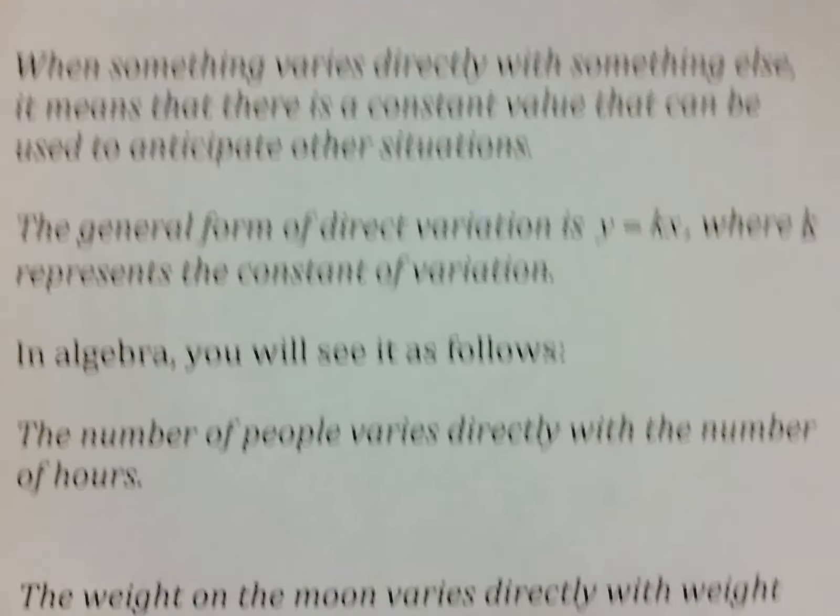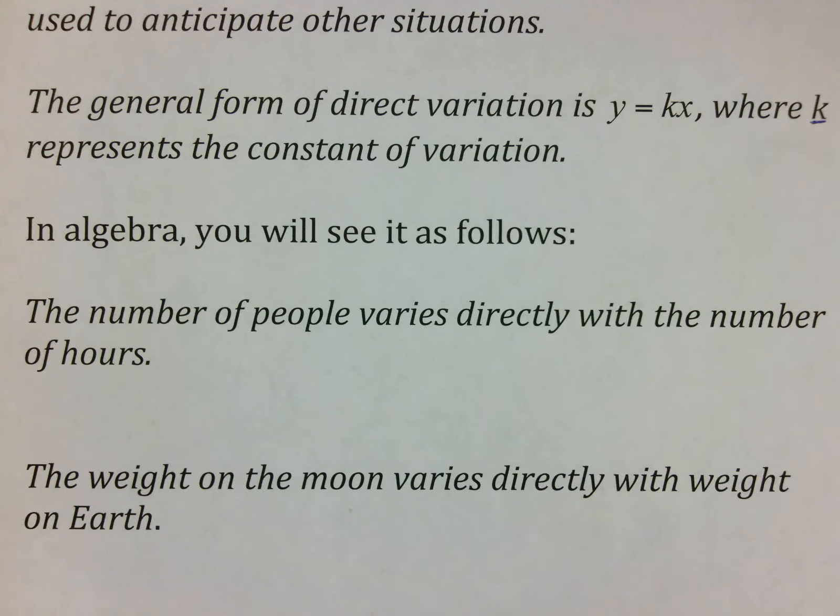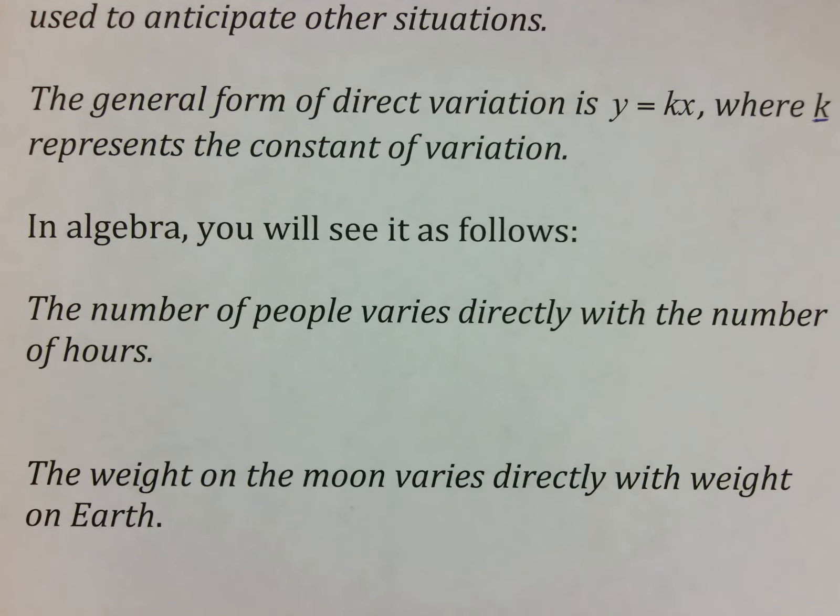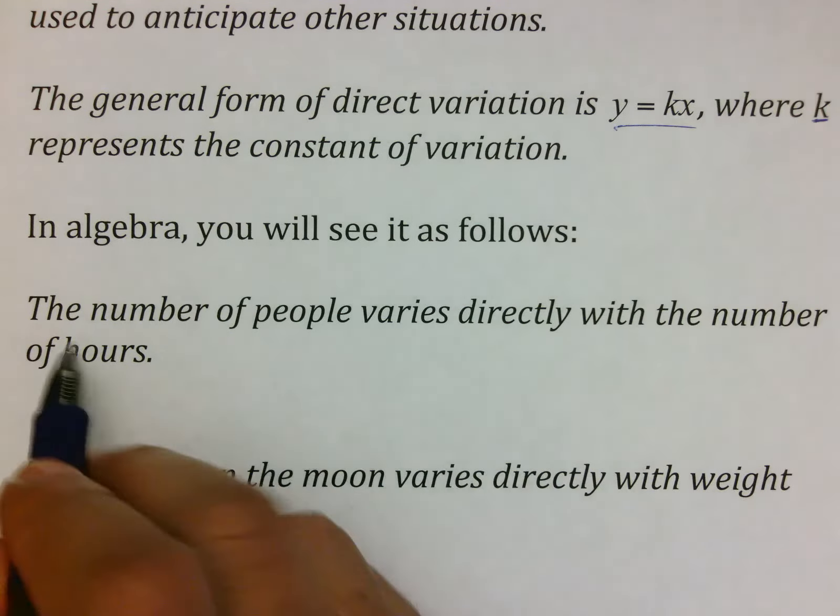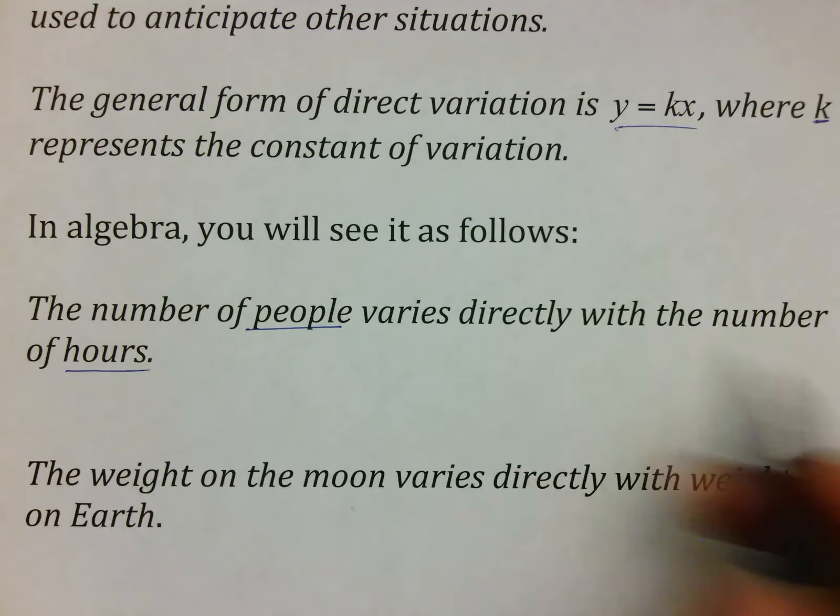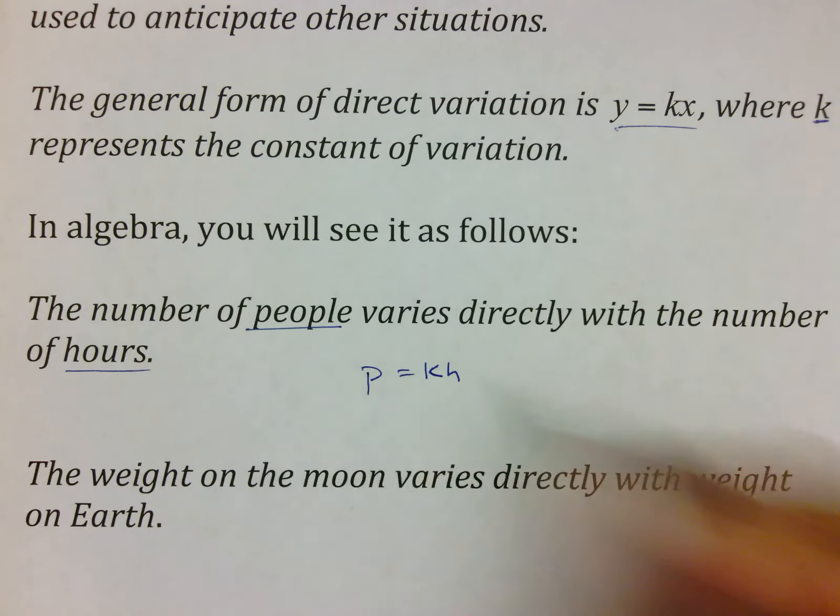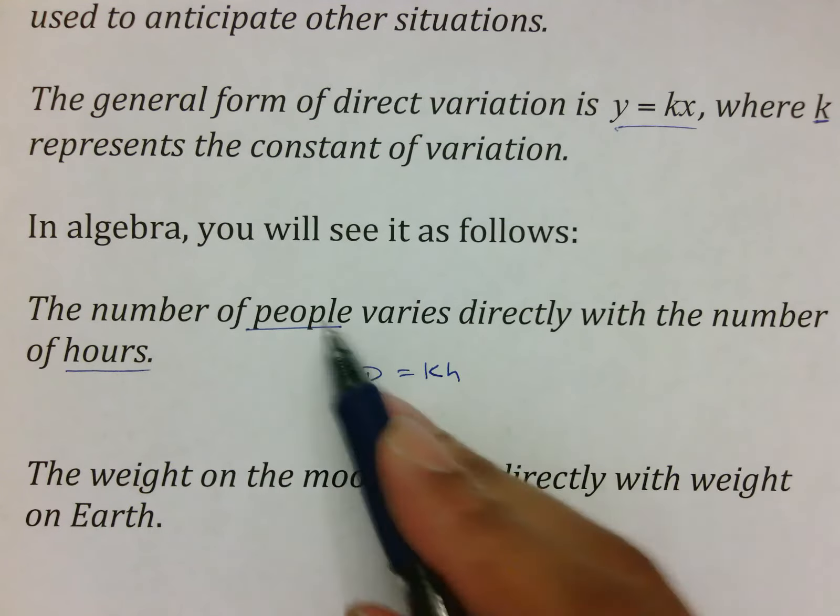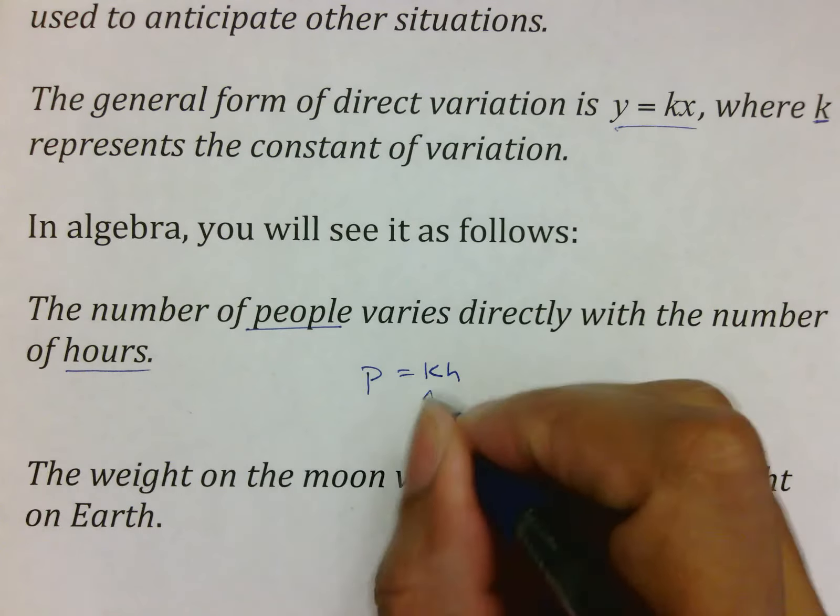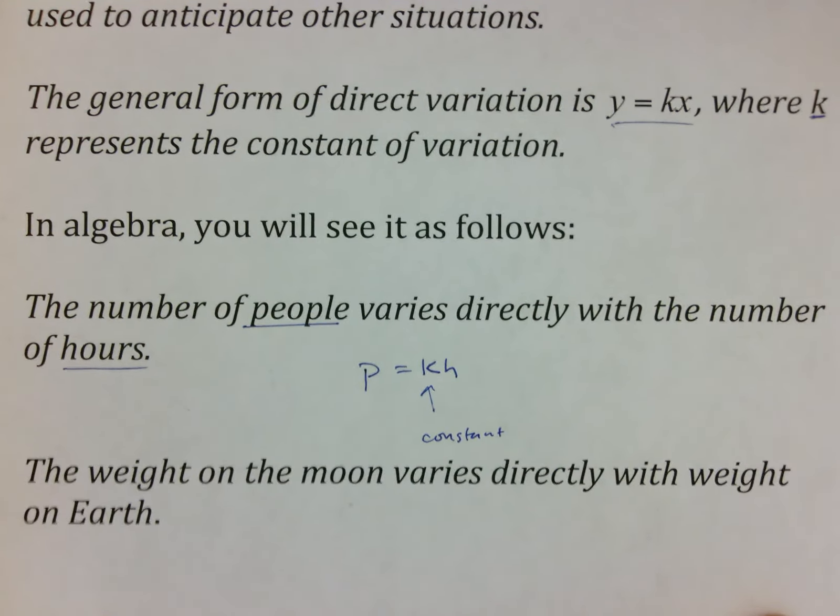In algebra, you'll see it as follows. If you were to see it on a SAT or a map question or anything like that, it would say something about the number of people varies directly with the number of hours. And here's all you have to do using that general formula, y equals kx. Just use more familiar variables here. Number of people varies directly with the number of hours. I would say people would be a key word there. Hours would be a key word there. So you would put people varies directly with hours. So p equals kh. p would represent people, h would represent hours, and k represents your constant.